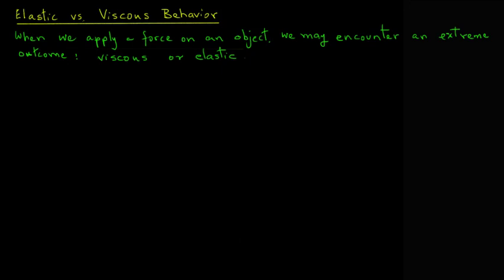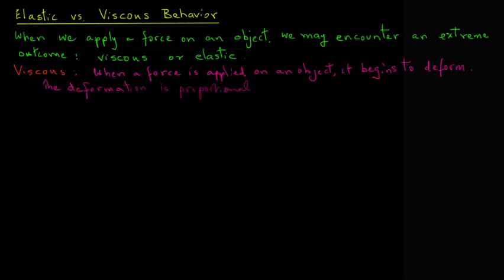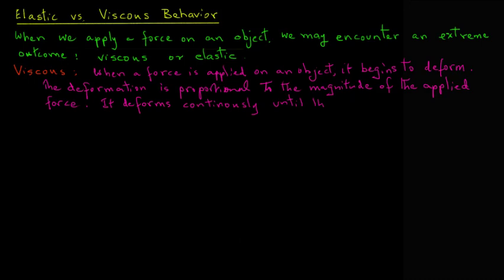In case of viscous, when a force is applied to an object, it will begin to deform. The deformation is proportional to the magnitude of the applied force. It will deform continuously until the force is removed. The object itself does not return to its original position. In other words, it flows.